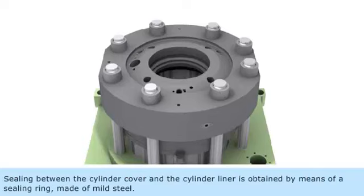Sealing between the cylinder cover and the cylinder liner is obtained by means of a sealing ring made of mild steel.